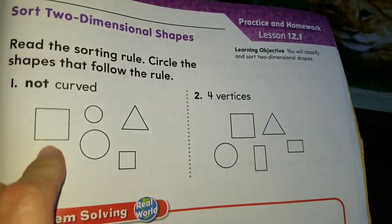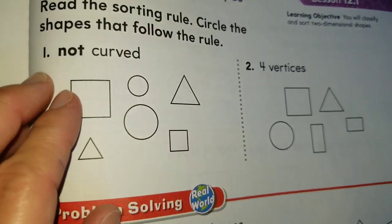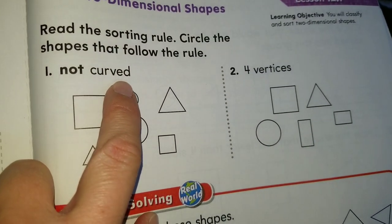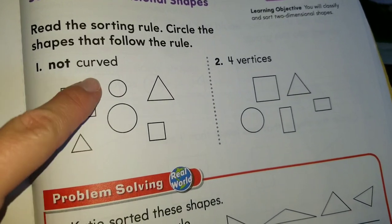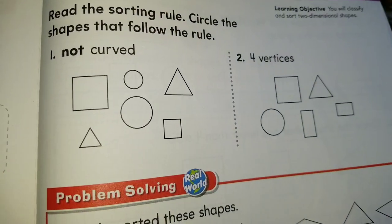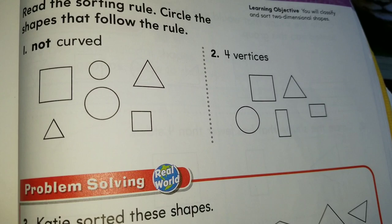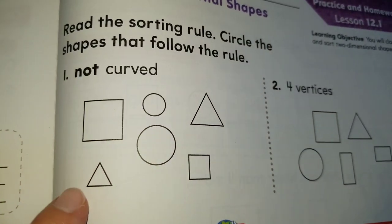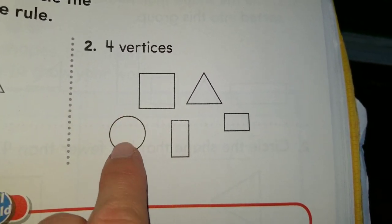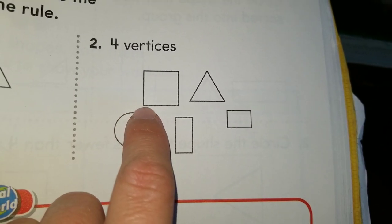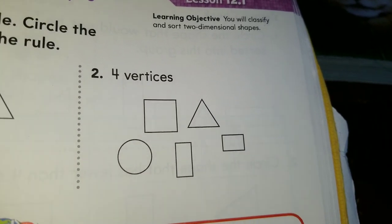Boys and girls, we are leaving our lesson and I want to guide you through the homework. Here we read the sorting rule and circle the shapes that follow the rule. The rule is 'not curved' — which are the ones that are not curved? The ones that have straight lines, the ones that have sides — like the squares and the triangles. Those are the ones we are going to circle. For number two: 'four vertices' — the vertices are the corners. Which shapes have four corners? One, two, three, four — those are the ones you're going to circle.